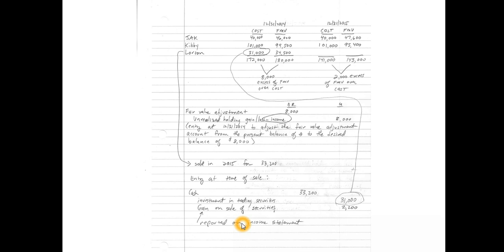The gain on sale of securities is a plain realized gain — analogous to the gain you recognize when selling property, plant, and equipment. It's reported on the income statement. So there's a $2,200 component of net income in 2015 arising from the realized gain on the sale of the Lorton stock.